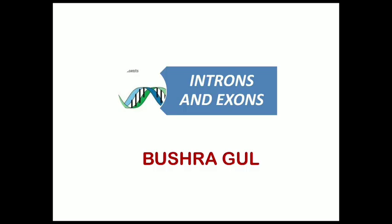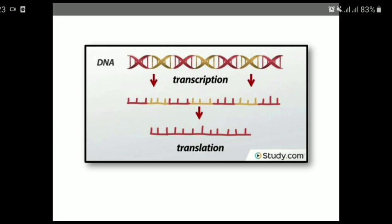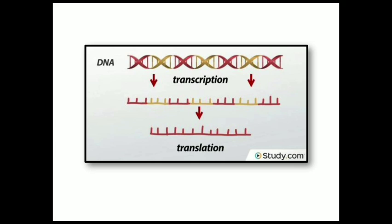Hello friends, it's Bhushra Gul and today I'm going to tell you about introns and exons. Before discussing introns and exons, we should recall the central dogma of molecular biology, which describes the two-step process of transcription and translation, by which information in genes flows into proteins — DNA is converted into RNA first, and then RNA is converted into protein.